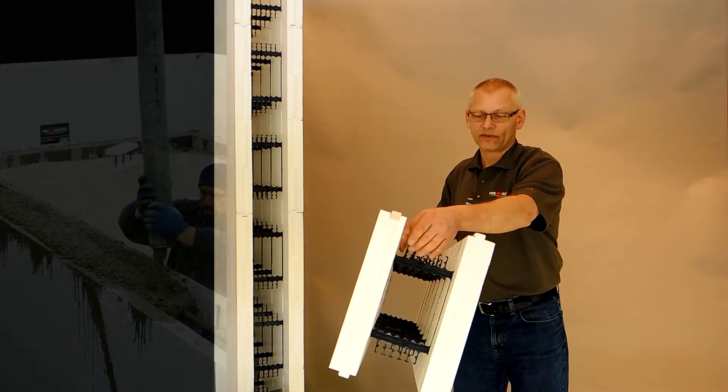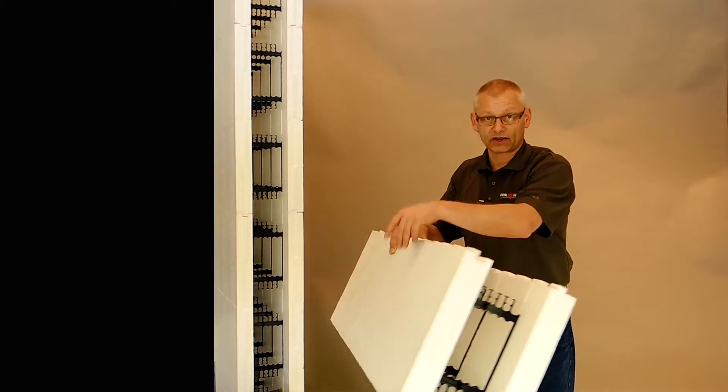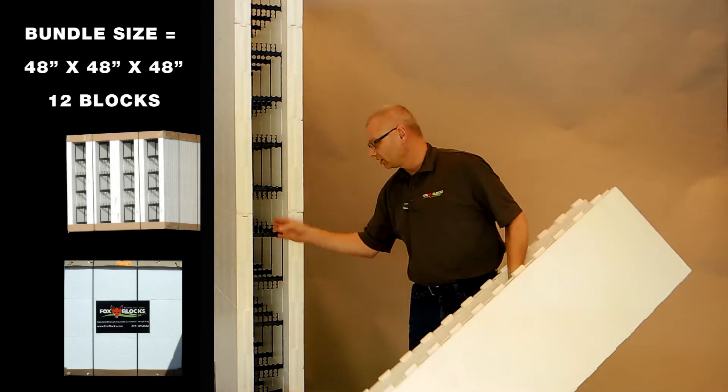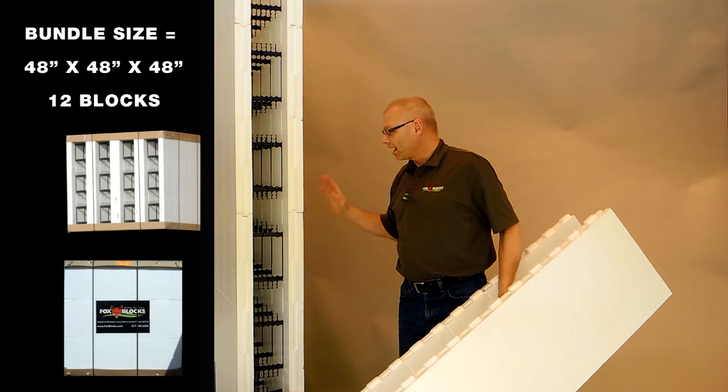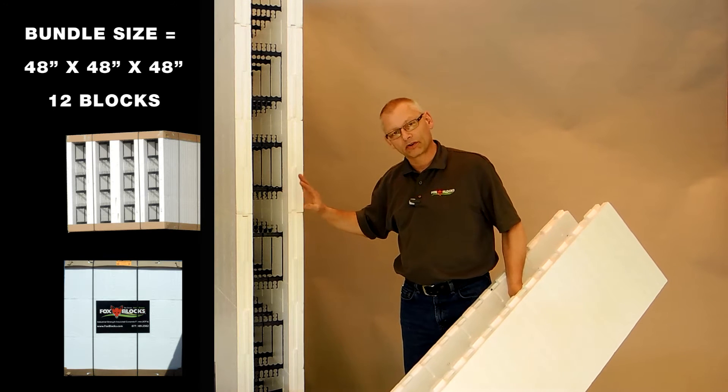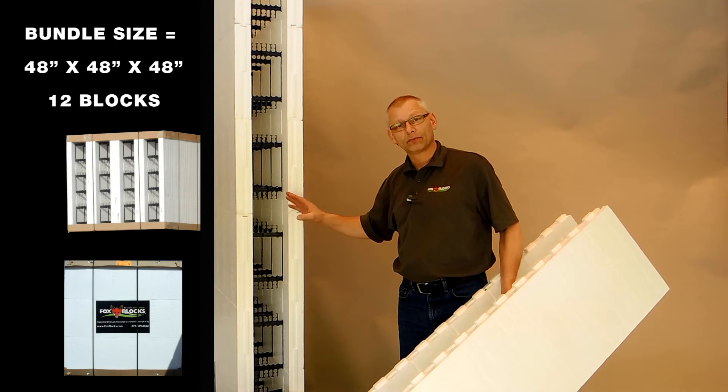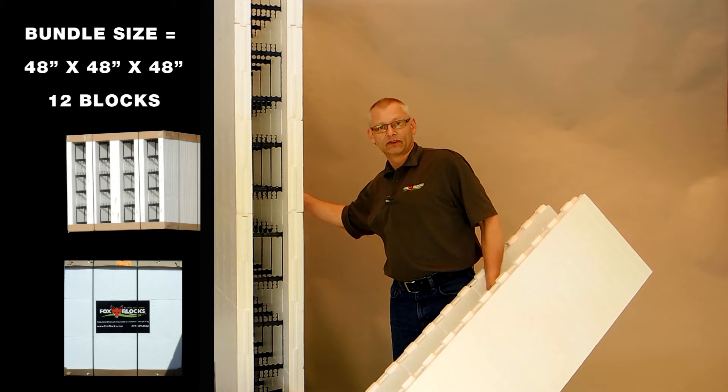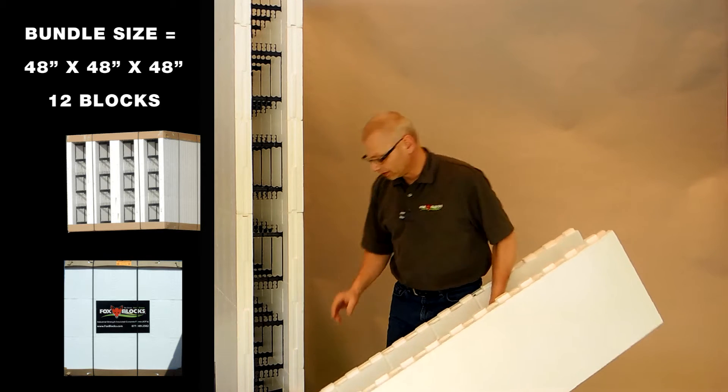We've also spaced the ties eight inches on center in both directions. These cross ties are eight inches on center, and if you look in our wall, that's eight inches on center both ways. When you place concrete in this wall, even if it's too wet and vibrated too much, the outside of the wall stays flat because we're strong enough to take it.